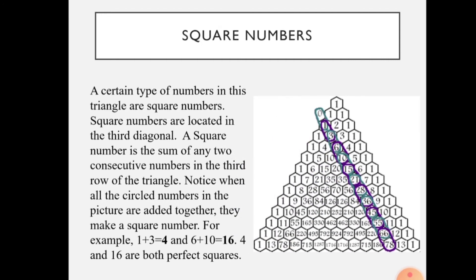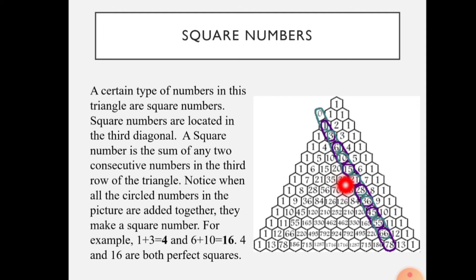Next, square numbers. In Pascal's Triangle, if you highlight one diagonal row, you can find perfect square numbers. Zero and one add to one — a perfect square. One and three add to four — a perfect square. Three and six is nine — a perfect square. Six and ten is sixteen — a perfect square. Ten and fifteen add to twenty-five — a perfect square. Fifteen plus twenty-one is thirty-six — a perfect square. So this is the perfect square number pattern found in the third diagonal.